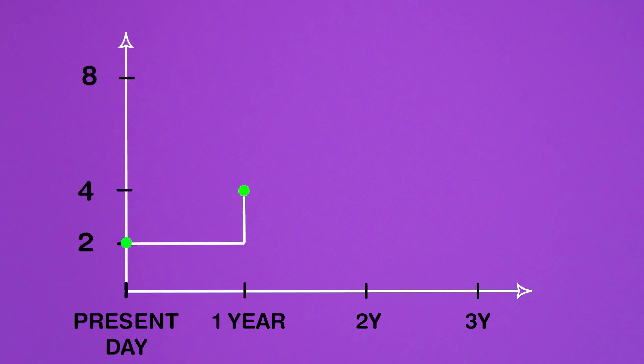Consider the case where a specific object doubles every time period. This is the present day. At each point on the timeline represents a single period of time. Assume you start with $2. It doubles at the end of the first time period, giving you $4.